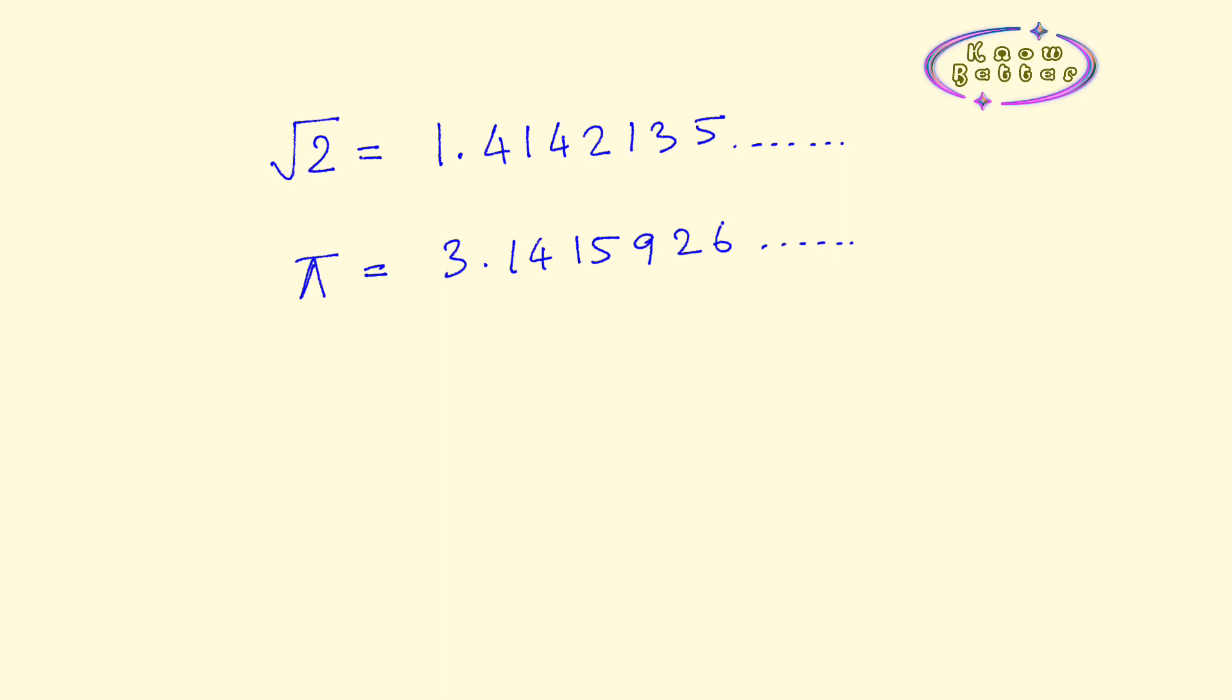And then we have numbers like root 2 or pi. When we convert this into decimal form we get something like 1.4142135 and it keeps on going. 3.1415926 and it keeps on going. The interesting part here is that whatever numbers come after this 5 here or 6 here, it will be every time a new number. There is no repetition. There is no cycle. We have seen the example of a rational number where 10 by 3 can be written as 3.333, so there is a repetition of 3.